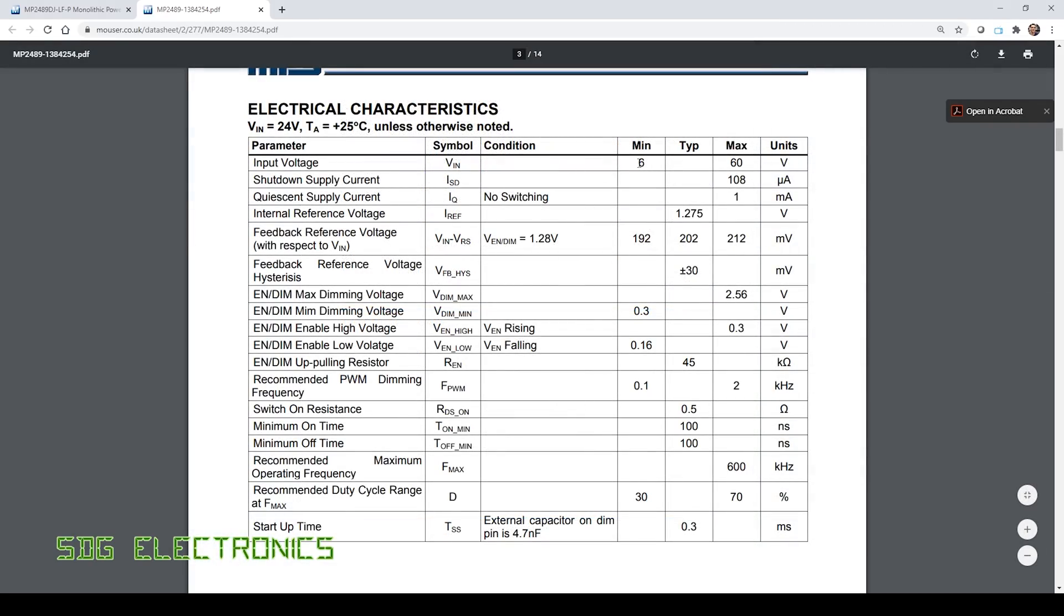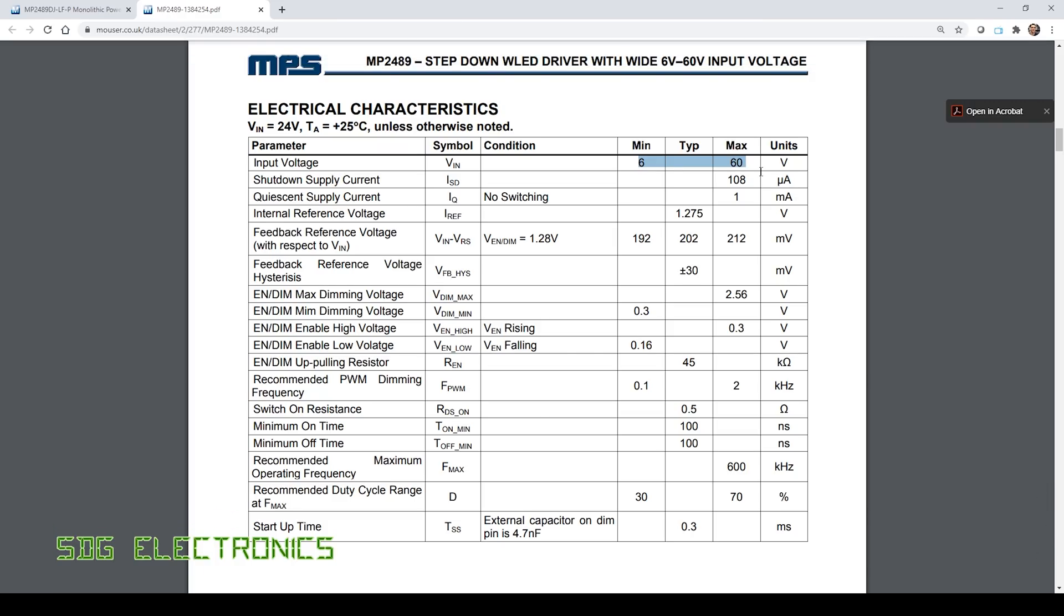So the first difference is the input voltage range. So six all the way up to 60 volts. So the previous device was up to 36 volts. So if we do see any transients on the input, this one is already going to be quite a bit more resilient to that. So all the way up to 60 volts, we're very unlikely to see those kind of voltages.